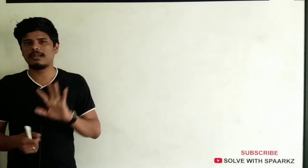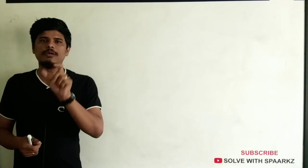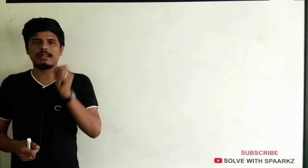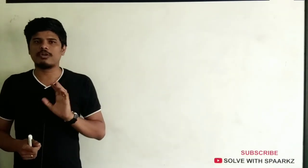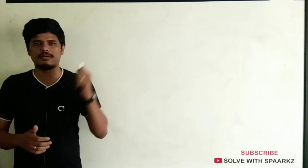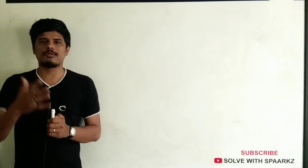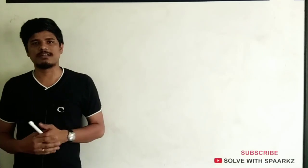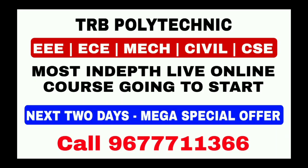We want to talk about one of the important issues — one of the properties with two and three variables. TRB Polytechnic — EEE, Mechanical, Civil, CSE — most in-depth online course.